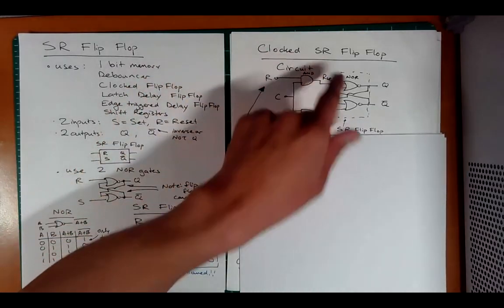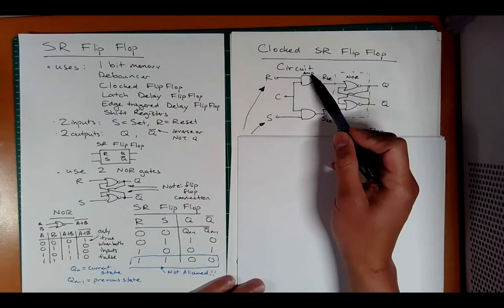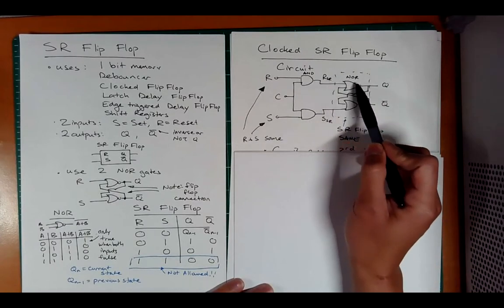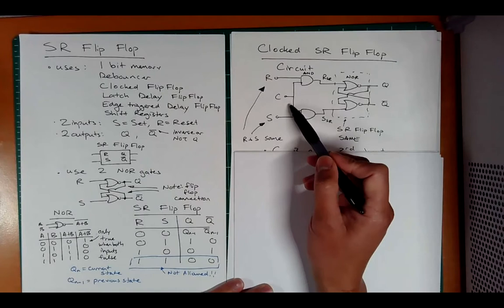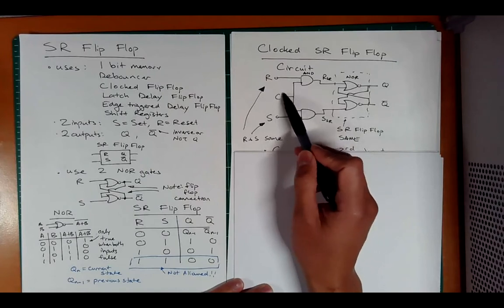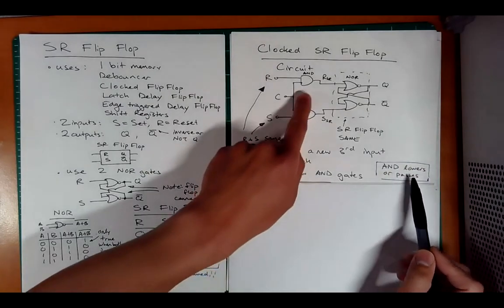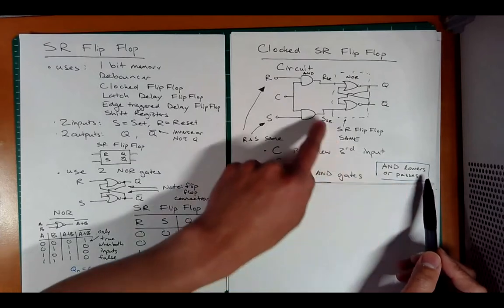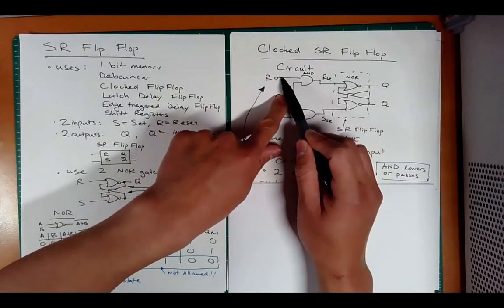Here's a clocked SR flip-flop. Notice it has the same SR flip-flop, the only difference is that it has these AND gates. So I have RSR and SSR, but then I have my R and S on the outside. There's also another input C for clock. If C is low, it doesn't matter what R is — this is going to be dead. If C is high, then the output is whatever the input is.